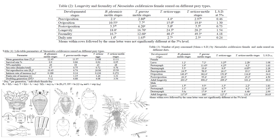Additionally, net reproductive rate of Neoseiulus californicus was highest at 25 degrees Celsius at 22.92 females per female, and lowest at 30 degrees Celsius at 16.74 females per female. The mean generation time decreased from 20.61 to 16.79 days with increasing temperature up to 30 degrees Celsius. Intrinsic rate of natural increase was maximal at 25 degrees Celsius.